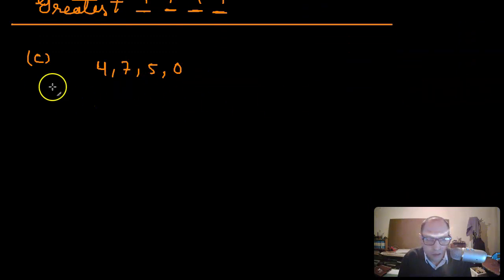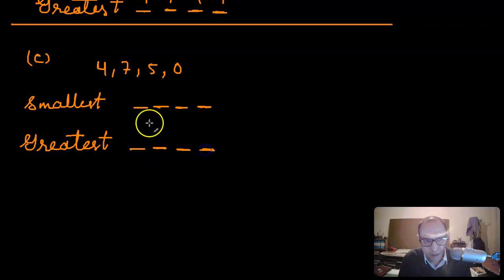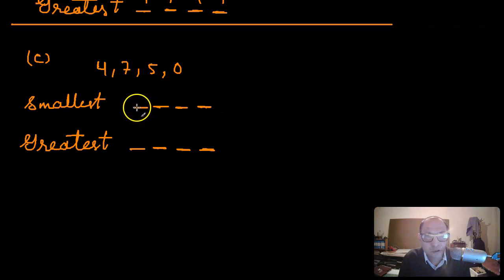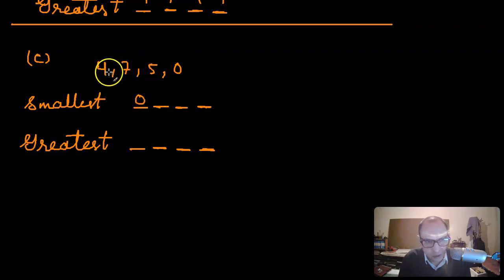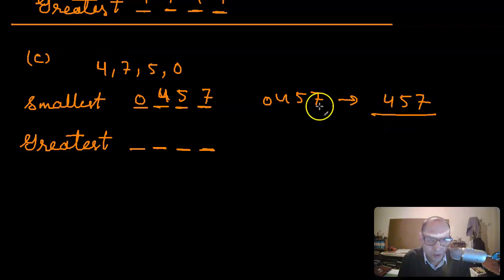You want to make the smallest and greatest four-digit numbers using the digits four, seven, five, and zero. For the smallest number you have to make the largest place value as small as possible. The smallest digit is zero, but if I put zero first, then the number is zero-four-five-seven, which is just four hundred fifty-seven — a three-digit number, not a four-digit number.